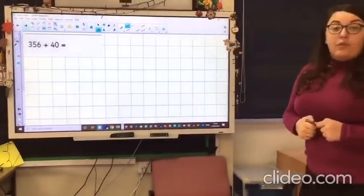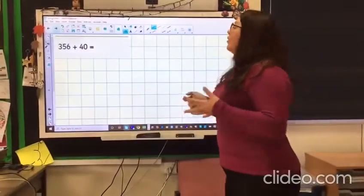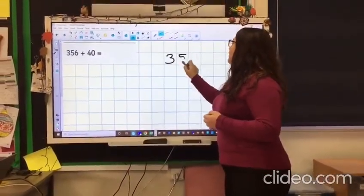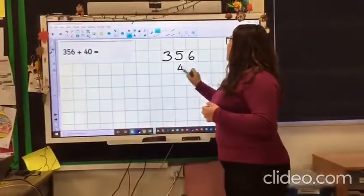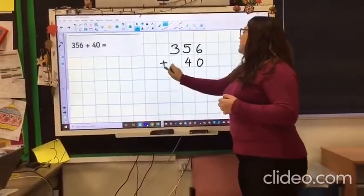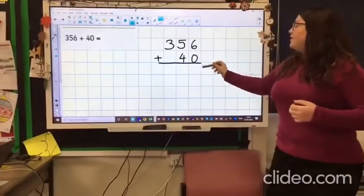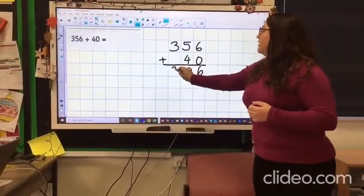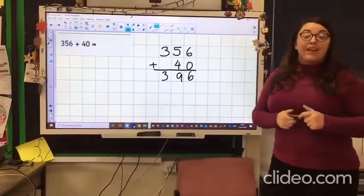356 add 40. Again we can either use our mental methods, thinking about changing the tens column, or we can use our column method. So again, 6 add 0 is 6, 5 add 4 is 9, 3 add nothing is 3. So your answer should be 396.